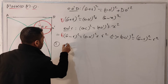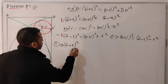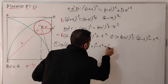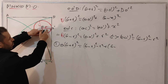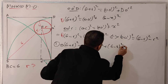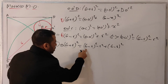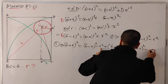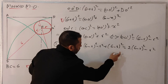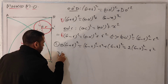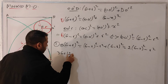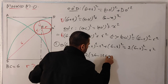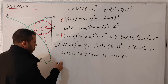Combining: (6 + r)² = 2·(6 − r)² − r². Expanding the left side: 36 + 12r + r². Expanding the right side: 2·(36 − 12r + r²) − r², which gives 72 − 24r + 2r² − r².